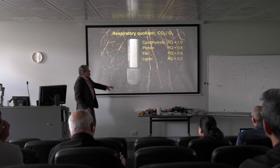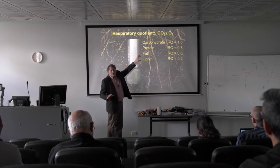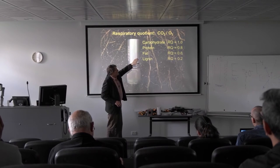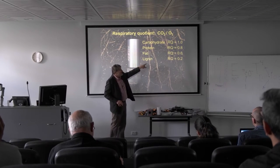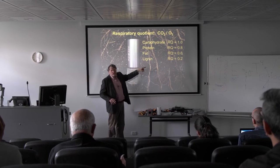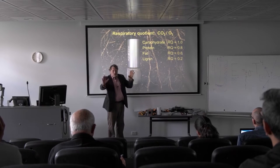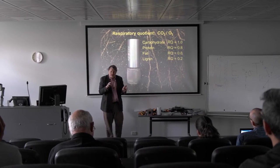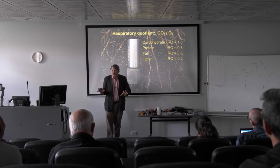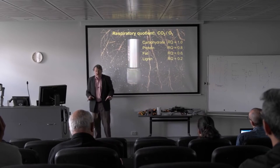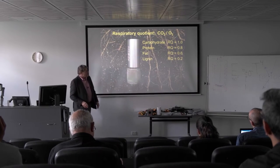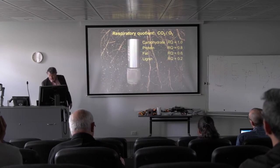This is the respiratory quotient in action: carbohydrates give a ratio of 1.0, proteins 0.8, fats 0.6, and lignin 0.2. So we can begin to tell what type of material is being degraded in the soil if we can develop this sensor. We think this would sell a lot and it's one we're slowly working toward developing.